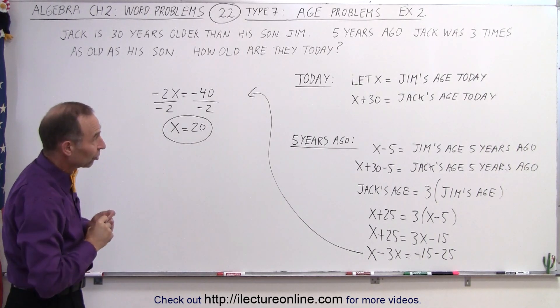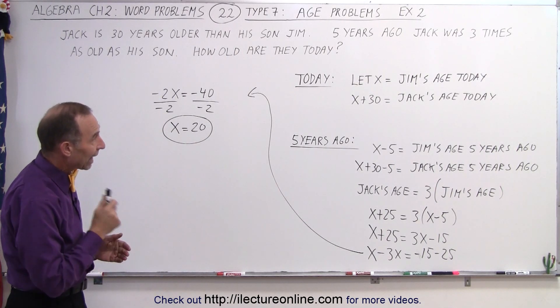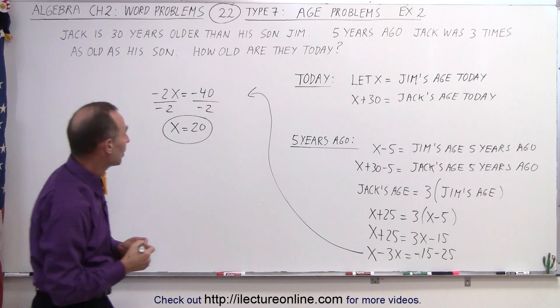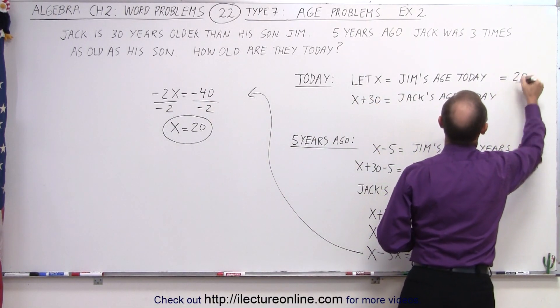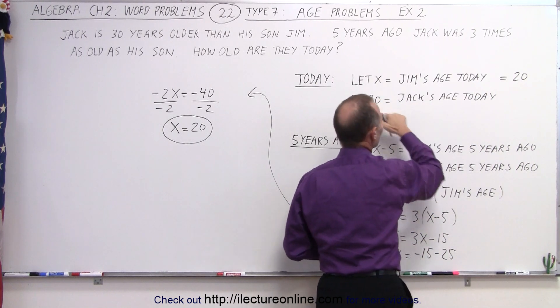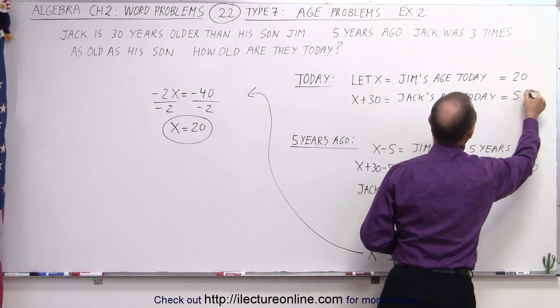Now we go back to our definitions. And we know that x equals Jim's age today. That means today Jim is 20 years old. And Jack's age today would be 30 more years which is 50 years old.